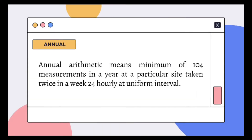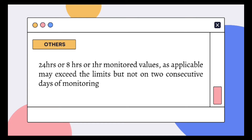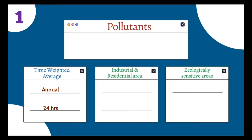Before studying this standard, you should remember that for the time-weighted average duration — that is, annual arithmetic mean — we should have taken a minimum of 104 measurements in a year at a particular site, and it should be taken twice a week for 24 hours at a uniform interval. While 24-hourly, 8-hourly, or 1-hourly monitored values as applicable to the particular pollutant may exceed the limits, it should not happen on two consecutive days of monitoring.